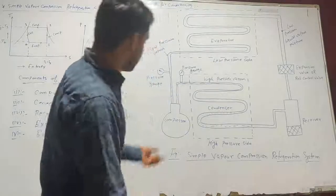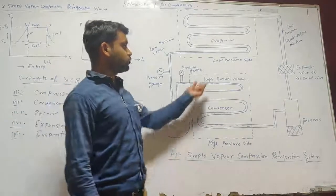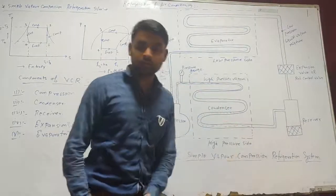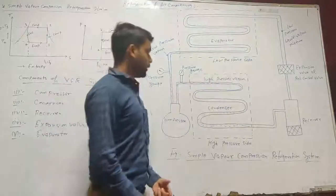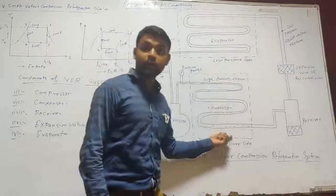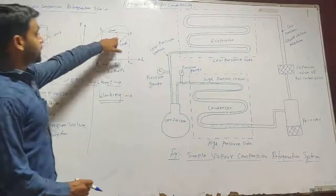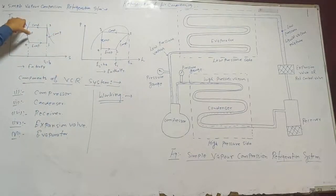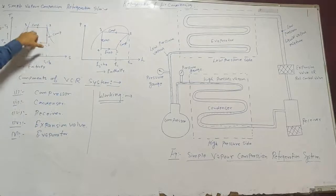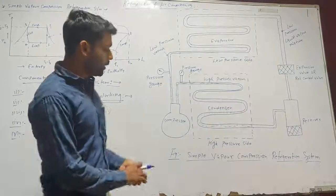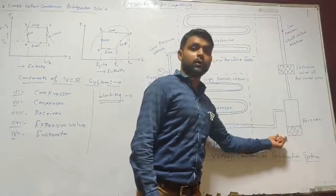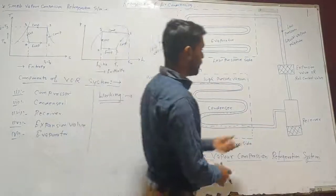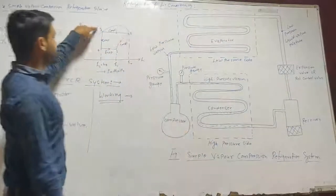From the compressor, the high pressure, high temperature refrigerant goes to the condenser. The condenser gives up the latent heat to the surroundings, and the refrigerant converts to liquid at constant pressure and constant temperature. The process from point 2 to point 3 is the condensing process. The condensed liquid refrigerant then goes to the receiver. The expansion process is from point 3 to point 4.